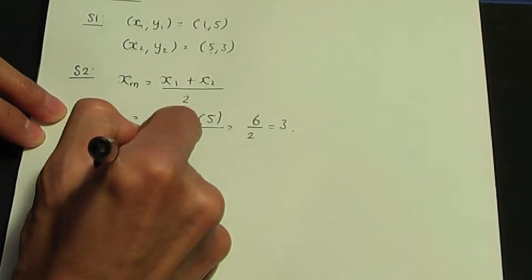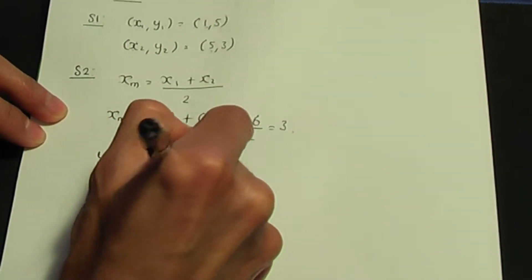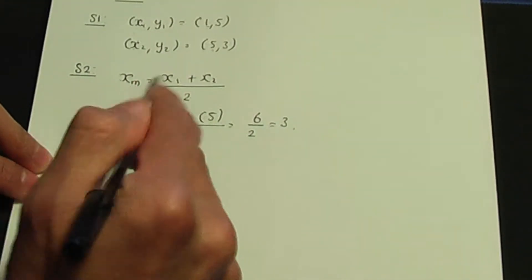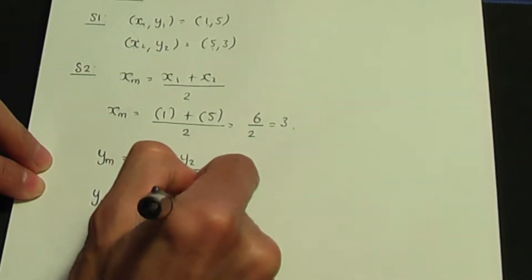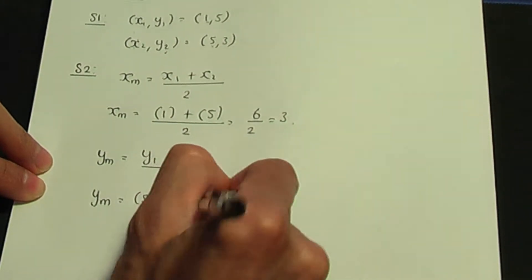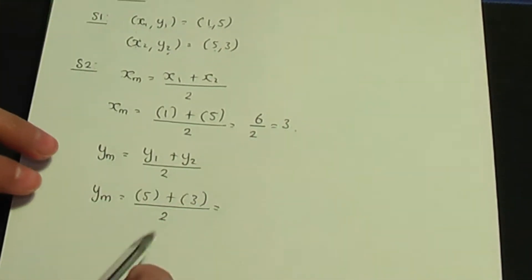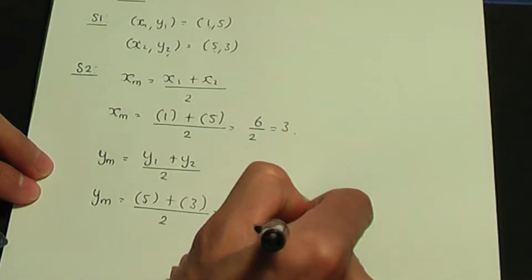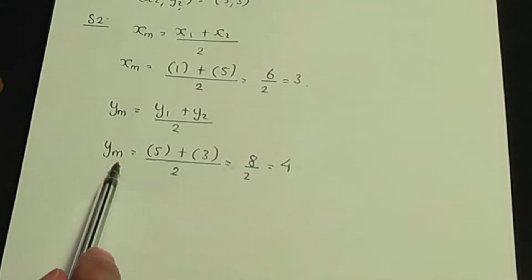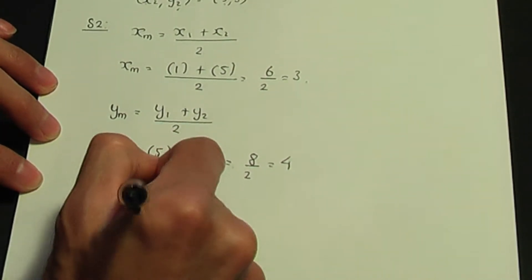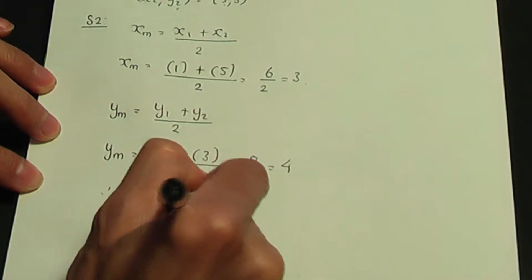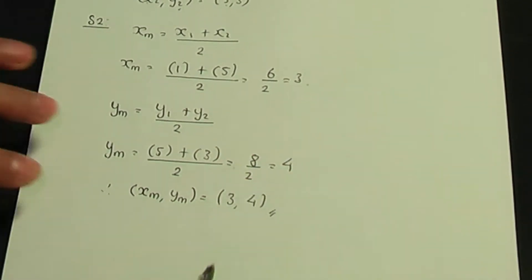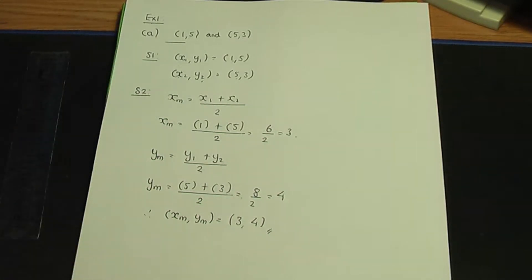Let's work out the y-coordinate of the midpoint, ym. The formula is y1 plus y2 divided by 2. If we substitute the data, y1 is 5 plus y2 which is 3, divided by 2. 5 plus 3 is 8, divided by 2 gives us an answer of 4. So 4 is the y-coordinate of the midpoint. The coordinates of the midpoint, xm and ym, are 3 for xm and 4 for ym. This is the solution to example one, part A.